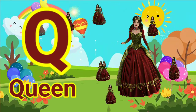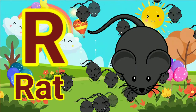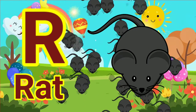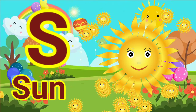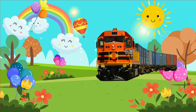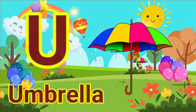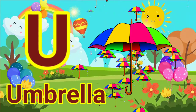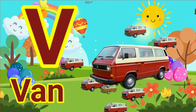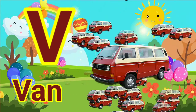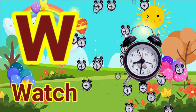U for queen, R for rat, S for sun, T for train, U for umbrella, V for van, W for watch.